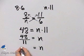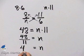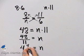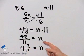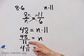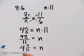11 divides into 48 four times. 4 times 11 is 44. So we have a remainder of 4, which we write over 11. So n is 48 over 11, or as a mixed number, n is 4 and 4/11.